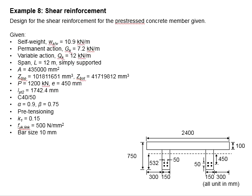Now let us try an example to design for the shear reinforcement for the prestressed concrete member. This is an extension from the previous example, which we have done the checking of the stress limits and also design for the ultimate moment resistance. Now we are looking into the design for the shear reinforcement of the member.